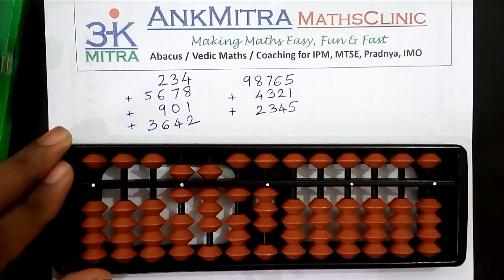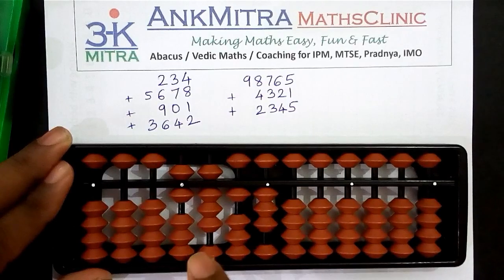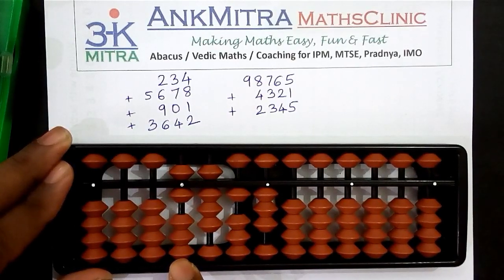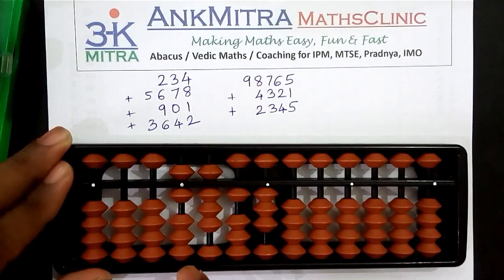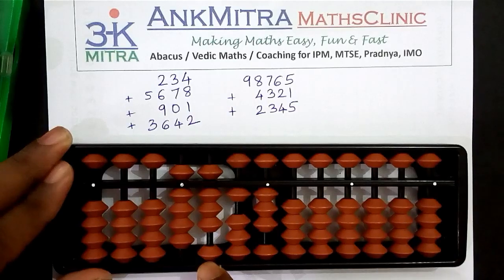Coming to the units place, just one is to be added, so we can add one directly. The last number is three thousand six hundred and forty-two, so we'll start on the thousands place. Adding three on the thousands place is possible directly because we have three beads available, so three thousand is done.